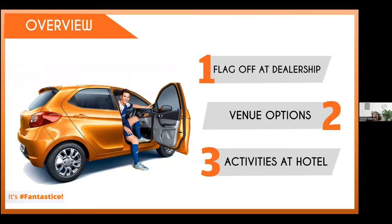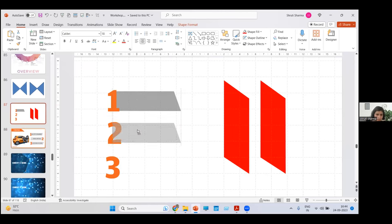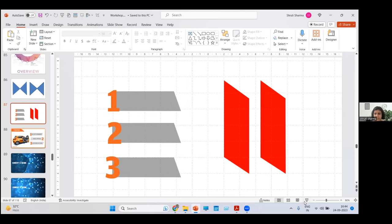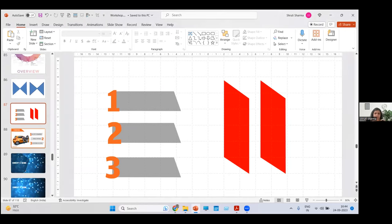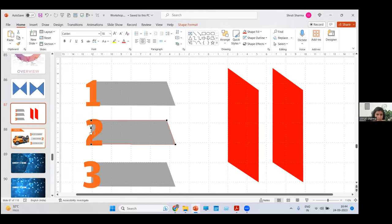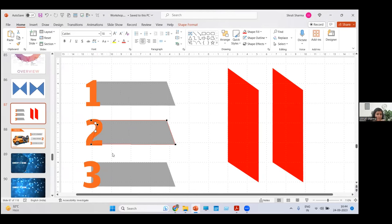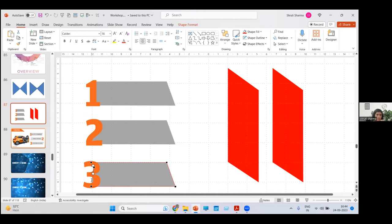Sometimes you won't even realize Edit Points are being used in a slide. For example, look at this design where numbers appear with a gray overlay partially covering them — you can remove that unwanted gray portion using Edit Points. Right-click, Edit Points, go to the unwanted area, Add a Point, and adjust it to hide only what you want. This gives you very precise control over shape boundaries.